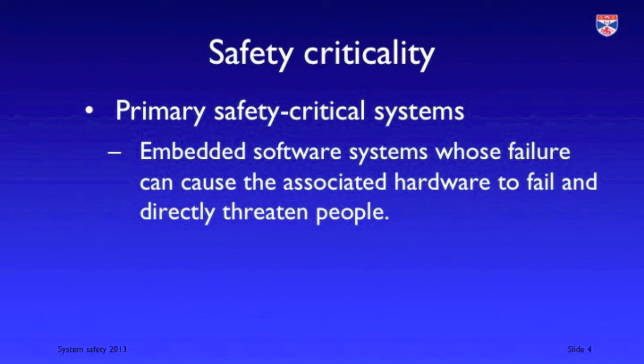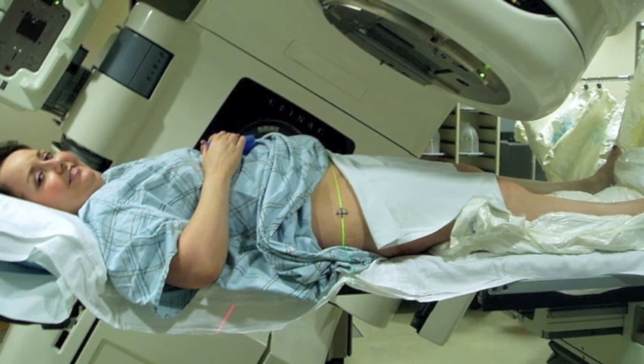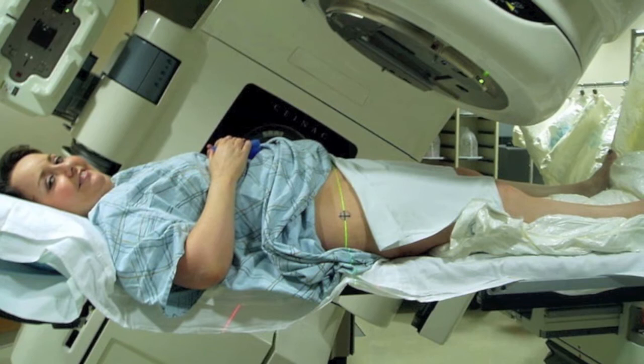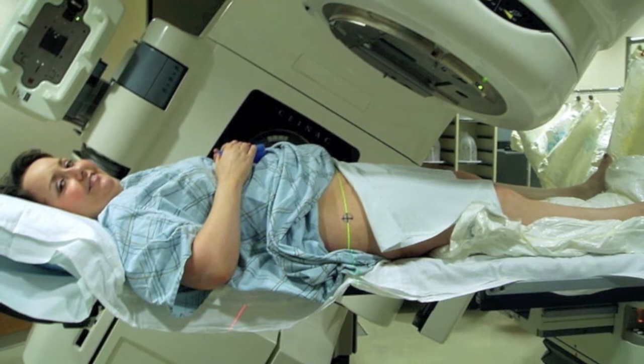There are two classes of safety critical system. The first are primary safety critical systems, where system failure can result directly in injury or death. An example is a radiation therapy machine used in hospitals to deliver radiation to kill tumours in people suffering from cancer. It's a software-controlled machine, and if things go wrong, an overdose or underdose of radiation can be delivered, injuring the patient. This is a picture of such a machine — a different kind of radiation therapy machine went wrong some years ago, overdoses of radiation were delivered, and several patients were killed.